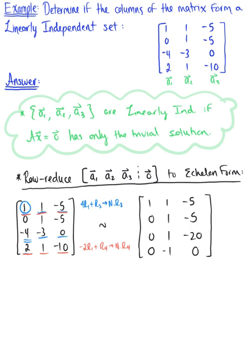Our first column is all set, and we're ready to move to our second pivot position. We want to use this pivot to eliminate the entries below it, requiring two steps: negative the second row plus the third row for the new reduced third row, and the second row plus the fourth row for the new reduced fourth row.